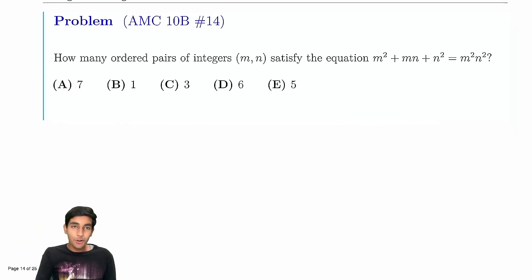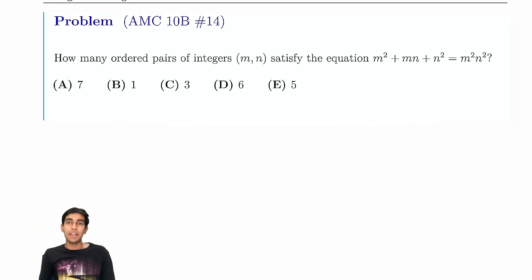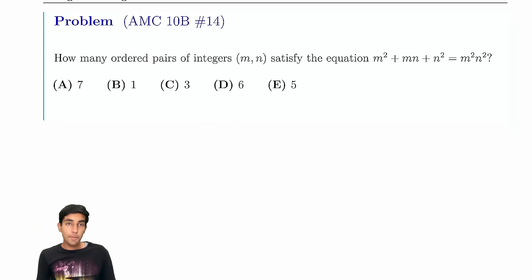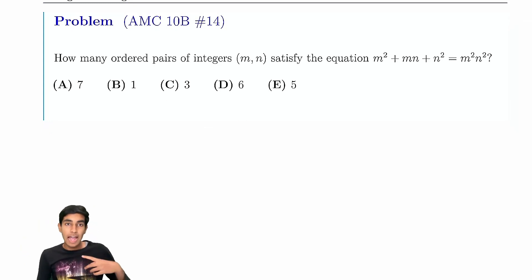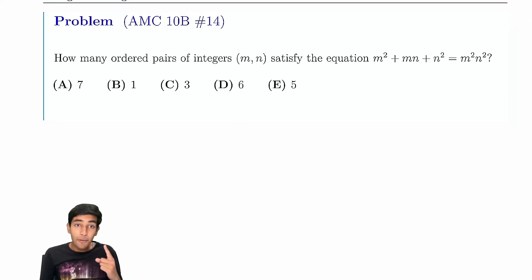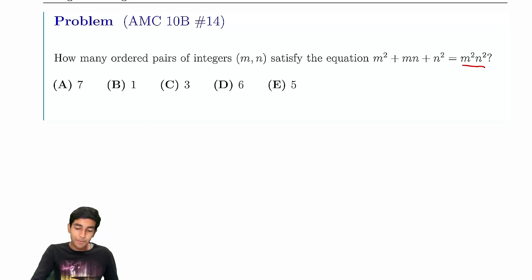Let's tackle this tricky Diophantine from the AMC10b. How many ordered pairs of integers satisfy m² + mn + m²n² = m²n²?